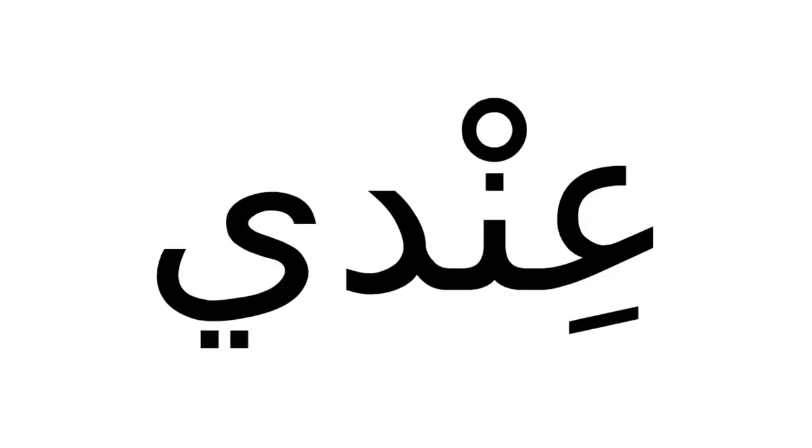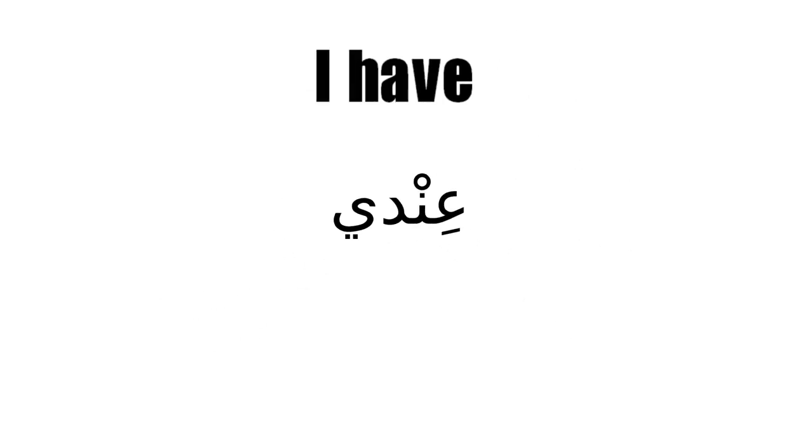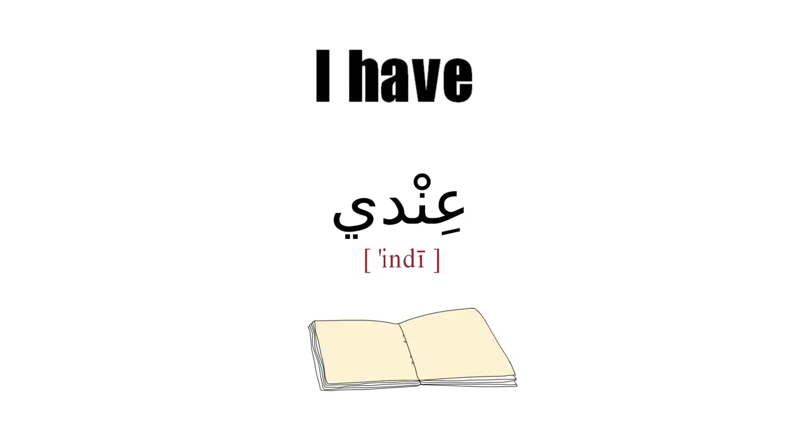The third verb is 'I have.' In Arabic, there are many ways to express possession. The one we will see is based on the adverb عند, which means 'at' or 'at someone's.' So 'I have' is عندي. For example: عندي كتاب — 'I have a book.'